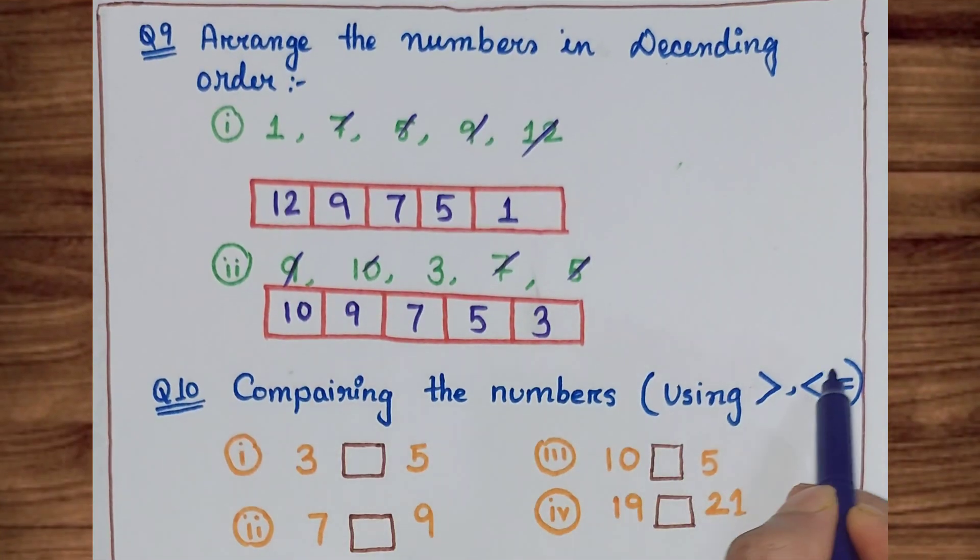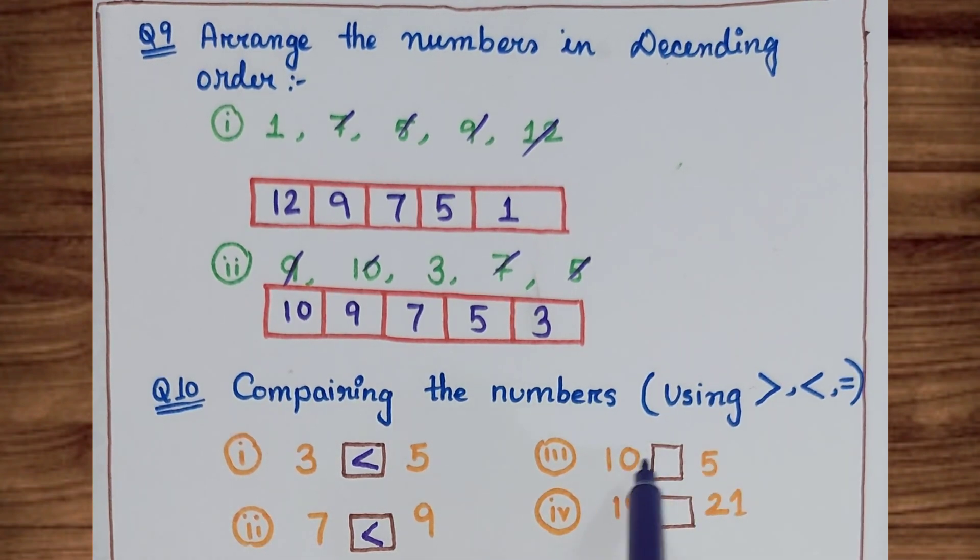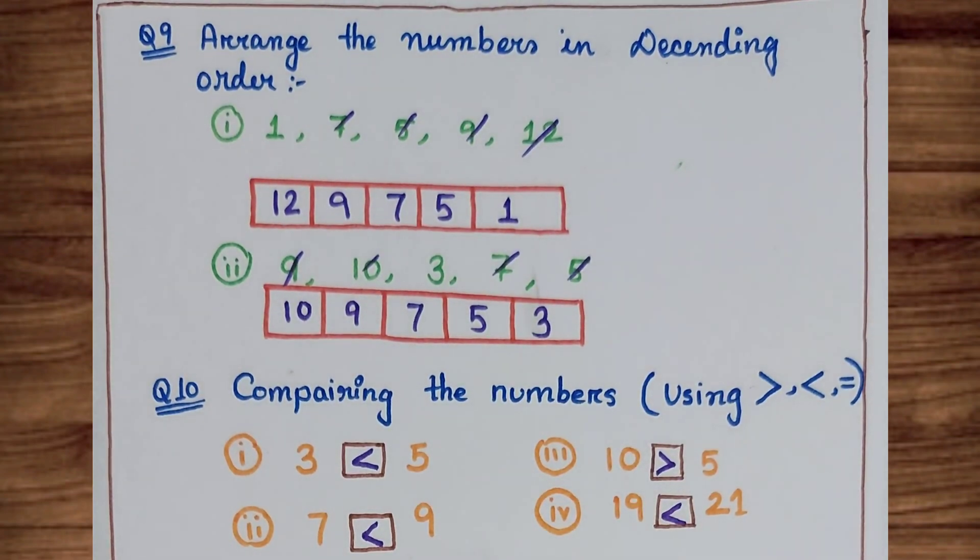Next, comparing the numbers. Whichever number is bigger, the open side of the symbol will be toward that side. For example, 3 less than 5. Five is bigger, so it's open on that side. Same way, 7 less than 9. The symbol is open toward 9. 10 is bigger, so it's open on that side. Next, 21 has the symbol open on that side.